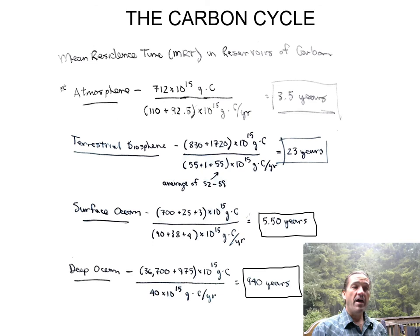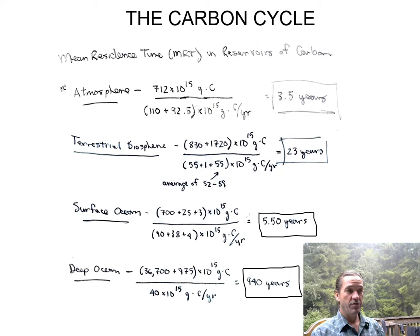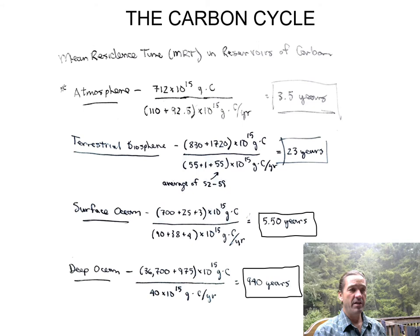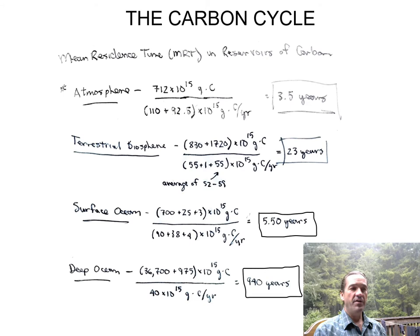With the box model, we can look at the inventories, look at the fluxes, and calculate the mean residence time that carbon stays in each reservoir. Staying above the lithosphere — within the biosphere, hydrosphere, and atmosphere — what we see is that, on average, CO2 spends about four years in the atmosphere. Currently they estimate it's a little longer than that due to a larger inventory, but roughly four to seven years.